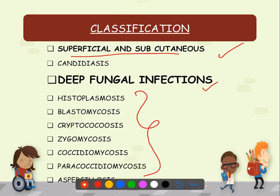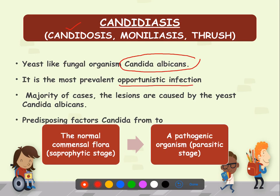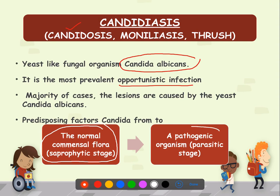Here we will deal with superficial and subcutaneous infection, specifically candidiasis. Candidiasis is also called candidosis, or by the earlier term moniliasis or thrush. It is caused by a fungal yeast organism called Candida albicans. It is the most prevalent opportunistic infection. Normally, Candida exists as a commensal or saprophytic organism, but in the presence of predisposing factors it becomes a pathogenic or parasitic organism.